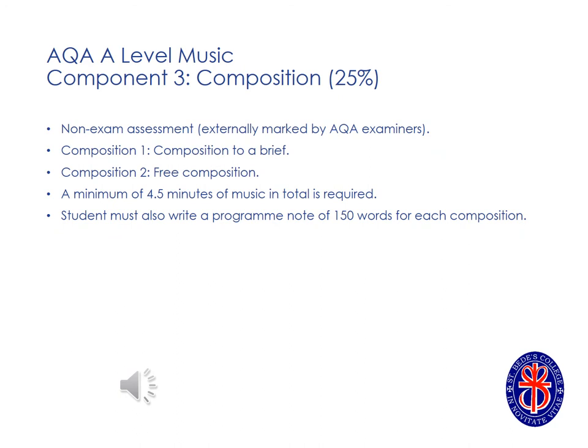For component 3, Composition, you will compose two pieces of music lasting for a minimum of four and a half minutes. Composition 1 is in response to a set brief, which you will be set in Year 13. For this composition, most of our students opt to compose a short choral piece of music in four parts, for soprano, alto, tenor and bass. Composition 2 is a free composition. You will start work on this composition in the summer term of Year 12. You will also be expected to write a short programme note for each composition, in which you detail the intent of the work.